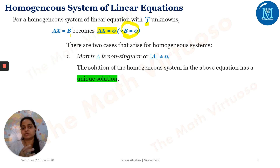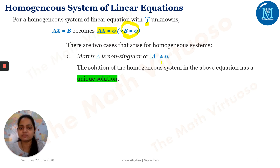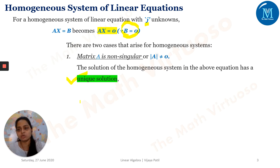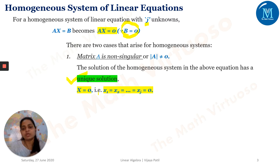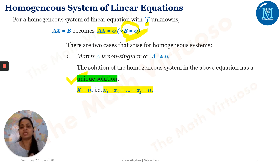There are two cases for the homogeneous system. First: determinant of A is not zero. What will happen if determinant of A is not zero? The system will have the unique solution — the same as in the non-homogeneous case — but this unique solution equals zero. This is the effect of B equals zero.